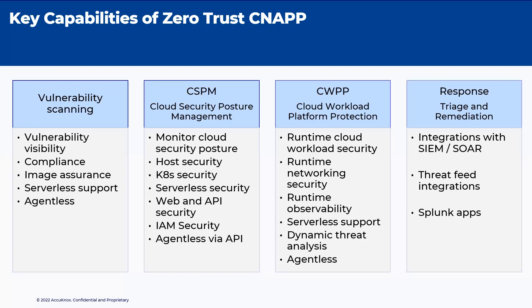CNAPP is an integrated platform that combines the following key components. First, vulnerability scanning, which ensures the integrity of containers before they enter the CI-CD pipeline. Next, cloud security posture management, which ensures that the basic security controls are in place — that is, ports and privileges are not over-provisioned. These two components, vulnerability scanning and CSPM, are static controls that protect against known vulnerabilities.